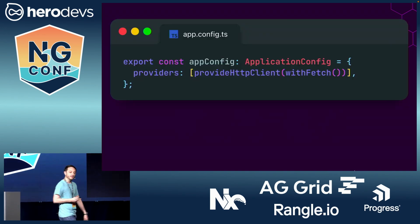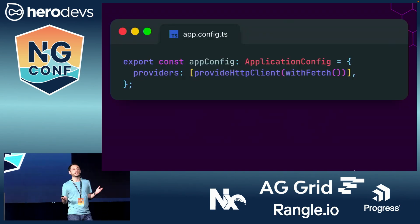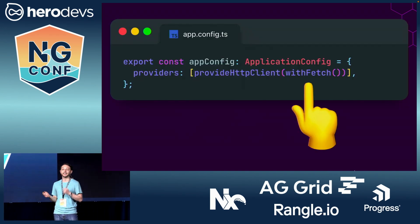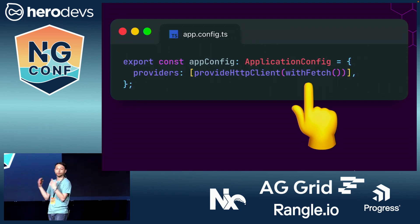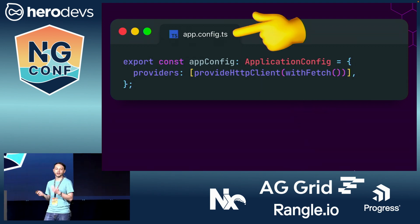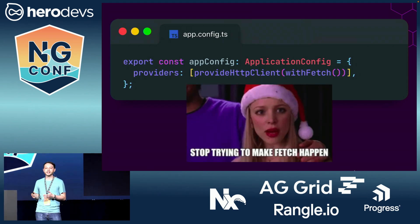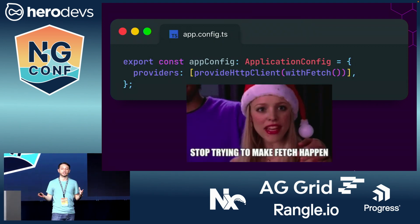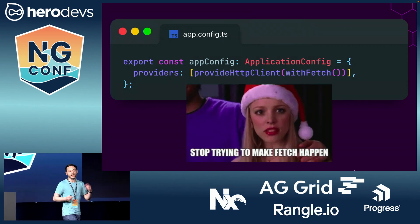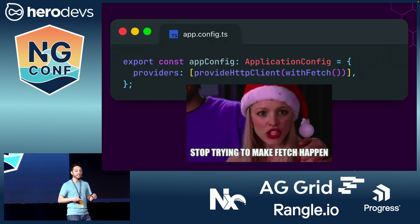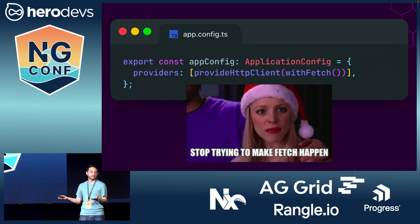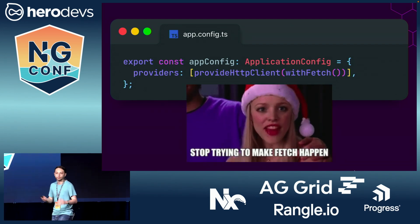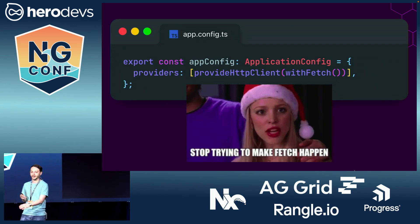Now on to the front end. The first thing we need to do to enable this real-time data streaming is to provide the HTTP client with fetch in our app config. This tells Angular to use the newer JavaScript fetch API behind the scenes, which opens the door to more advanced features like this real-time data streaming.